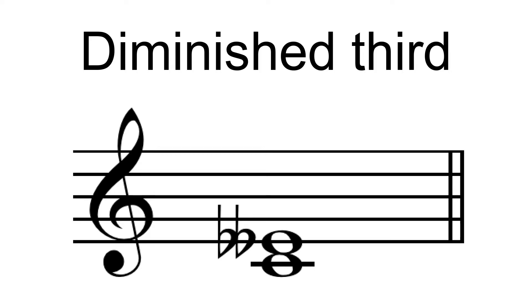And in any meantone tuning in the vicinity of quarter comma meantone, such as 31 equal temperament, it will come close to that value. For instance, in 31 equal temperament the diminished third is a cent sharp of 8:7.